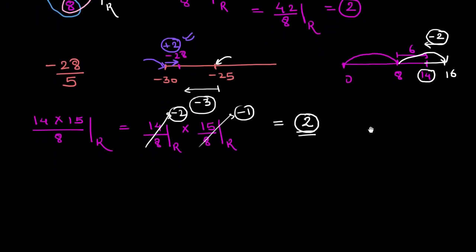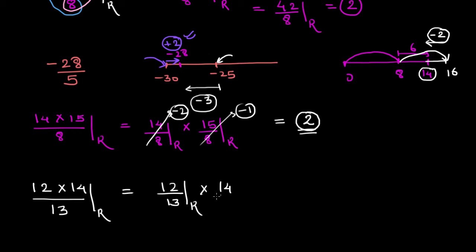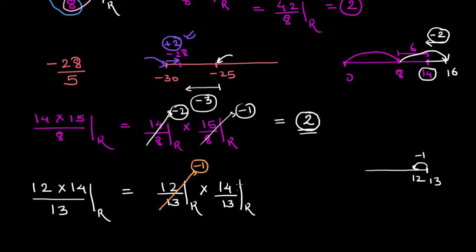Similarly, let us try one more simple problem. Let's say I have 12 multiplied by 14, and I need to divide this by 13 to find the remainder. Using negative remainders: for 12 divided by 13, I can reach 13 and subtract 1 to get back to 12, so I consider negative 1 as my remainder. For 14 divided by 13, the remainder is simply 1. So negative 1 multiplied by 1 gives me negative 1 as my remainder.